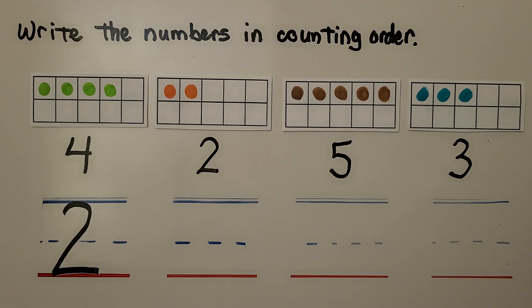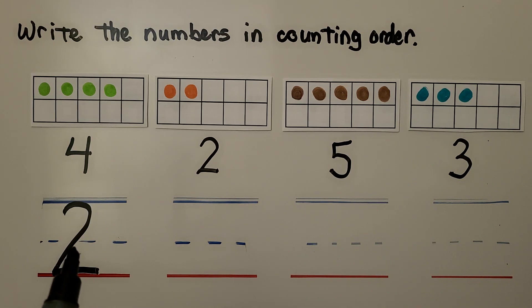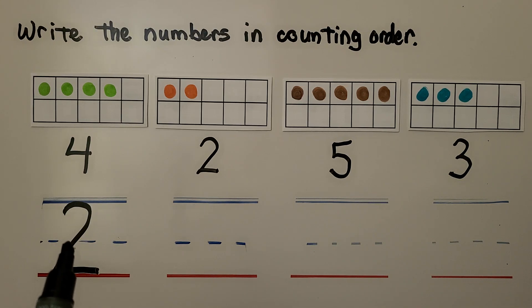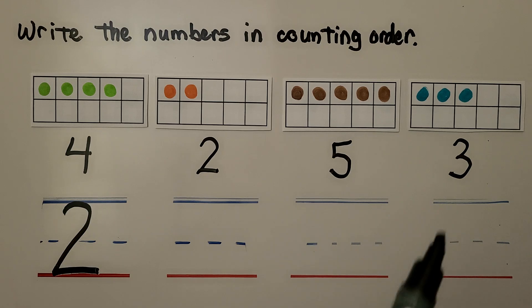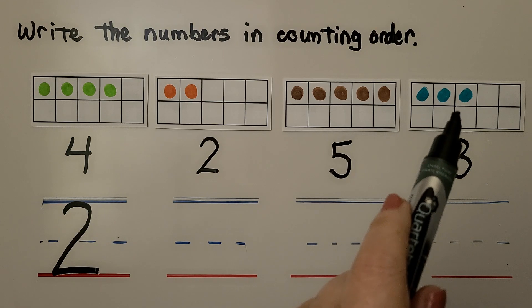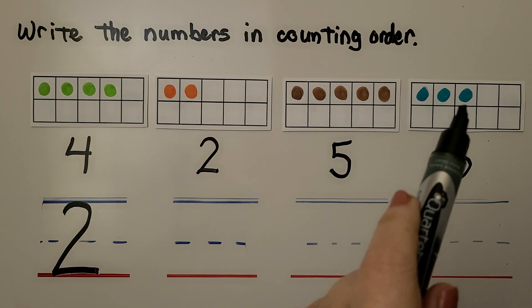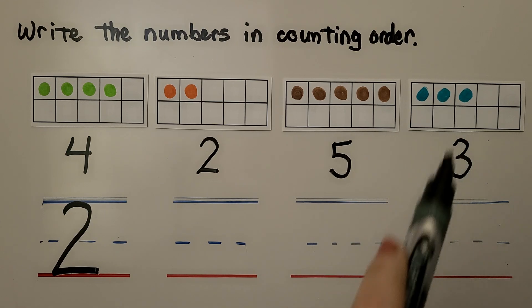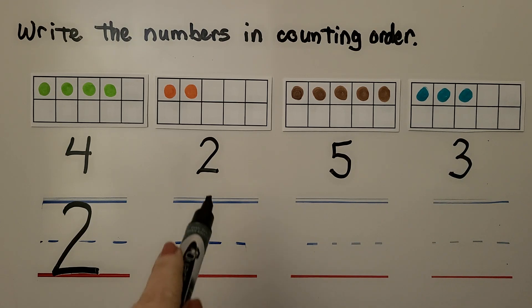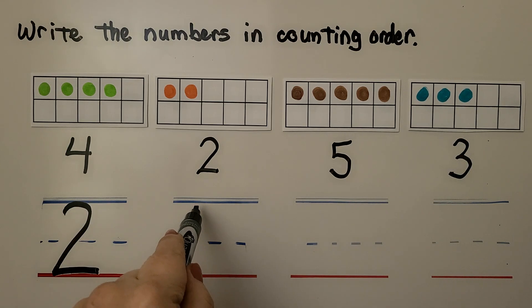The next number will have one more dot. The number that comes after 2 in counting order would be 3 — it has one more dot than 2, so we should put a 3 here.